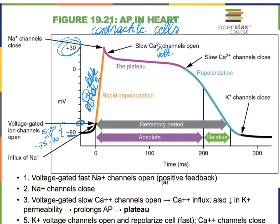Because of this plateau, we have a very long refractory period in the heart, including a long absolute refractory period shown in purple, during which the cell is so depolarized that a whole new action potential cannot fire. A new action potential is only possible during the relative refractory period, and more than likely not until the action potential has completely finished.